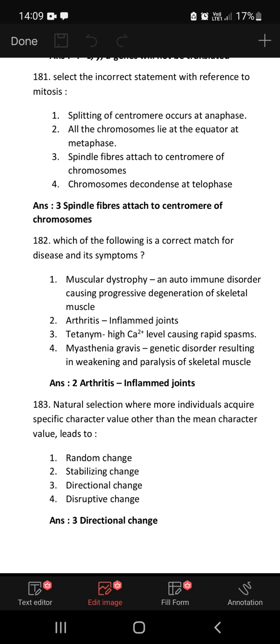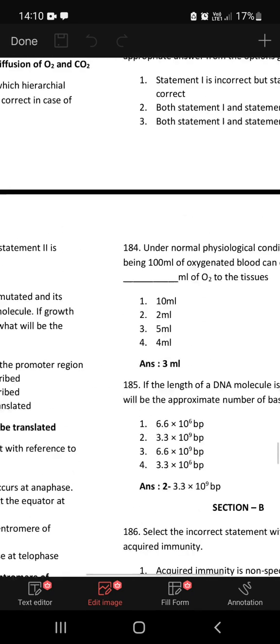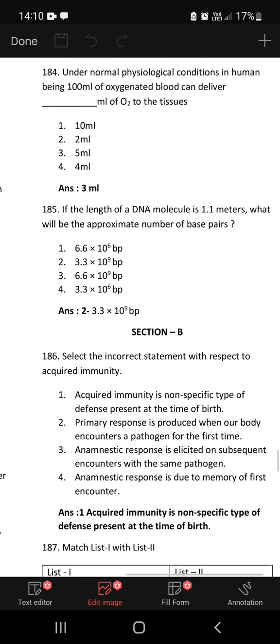Select the incorrect statement with reference to mitosis. Splitting up of centromere occurs at anaphase, yes that takes place. All the chromosomes lie at the equator at metaphase, also correct. Spindle fibers attached to the centromere of chromosome, this is wrong. It attaches to the kinetochore of chromosomes. Which one of the following is a correct match for disease and its symptoms? Muscular dystrophy is not an autoimmune disorder. Arthritis and inflamed joints, this is correct one. Myasthenia gravis, genetic disorder resulting in weakening and paralysis of skeletal muscle, this is also wrong. So the correct match is arthritis and inflamed joints.